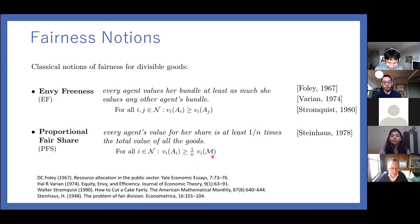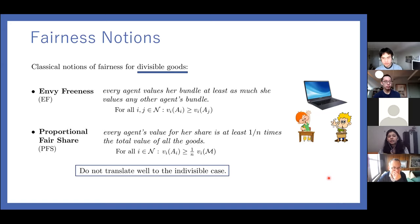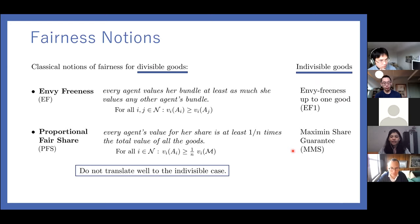The problem with these fairness notions for indivisible goods is that they don't translate well. For example, with one good and two agents, one agent would envy the other and neither would satisfy their proportional fair share guarantee. This led to the study of notions more appropriate for indivisible goods: envy-freeness up to one good (EF1) and maximum share guarantee (MMS), which are analogues of envy-freeness and proportional fair share respectively.